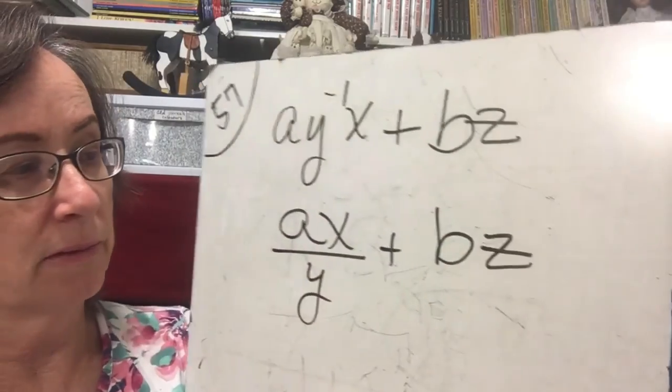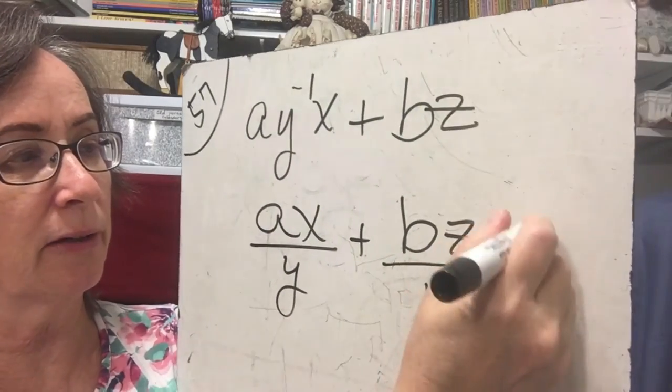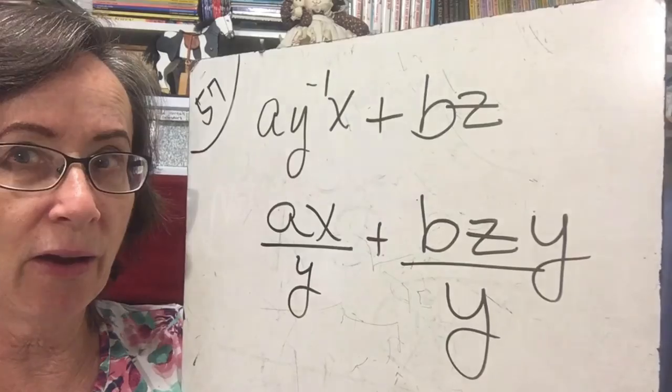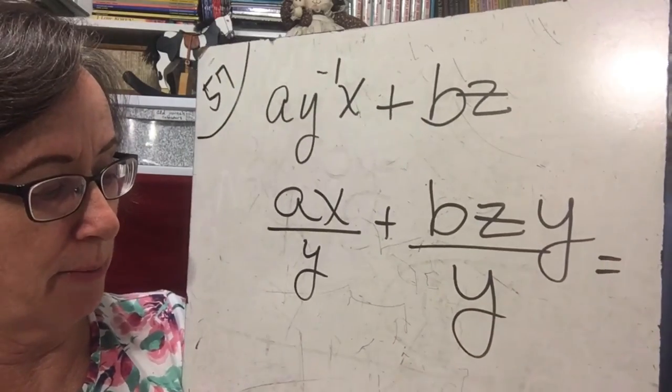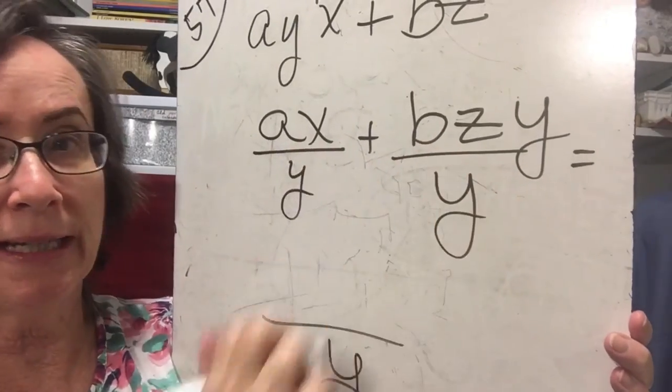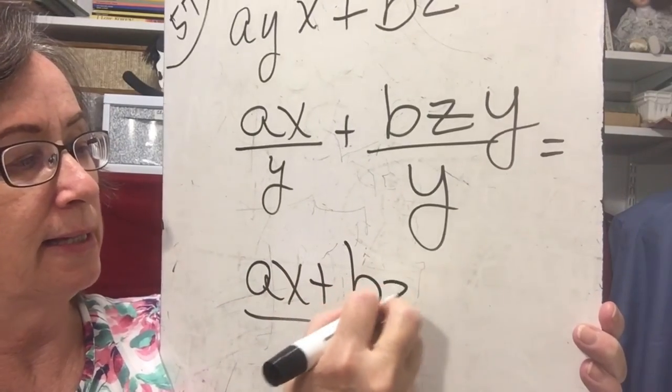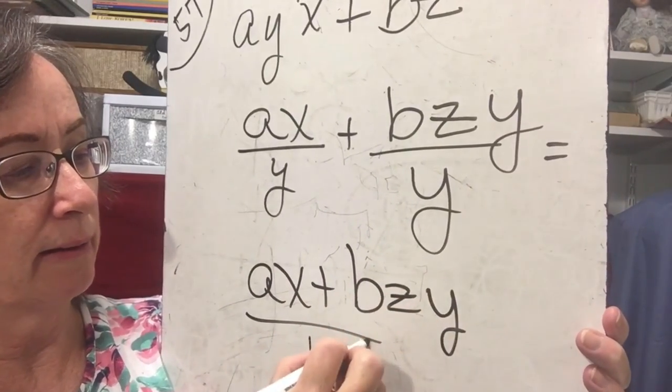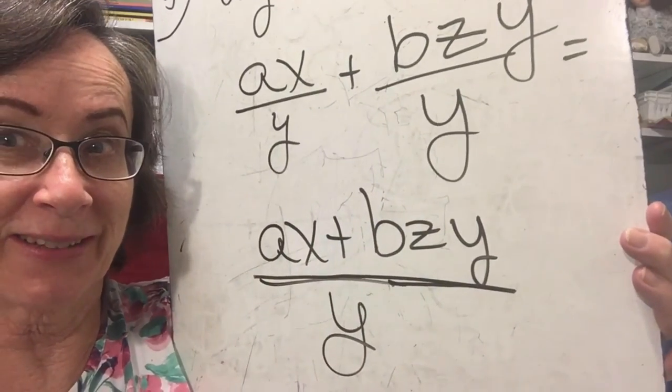We have a lot of different variable terms in here but we need to simplify this expression. So we're going to move the y downstairs. So we have ax over y plus bz. Now, I need a y under here so I'm going to make a denominator and multiply by y over y. So now I have a common denominator of y and I'm ready to just add together ax plus bz y. There's my answer.